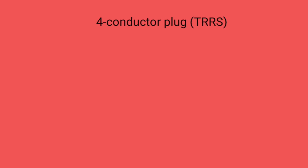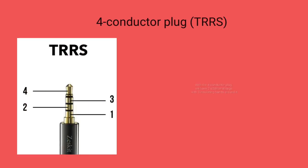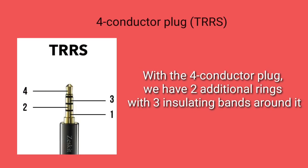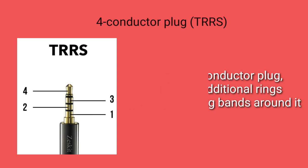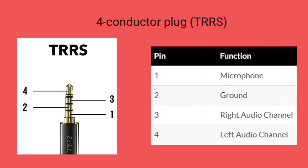Four conductor plug TRRS. With a four conductor plug, we have two additional rings with three insulating bands. The first conductor is for microphone, the second conductor is for ground, the third is for right audio channel, and the fourth conductor is for left audio channel.